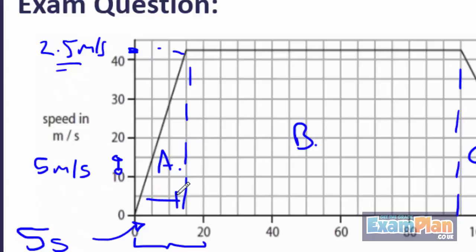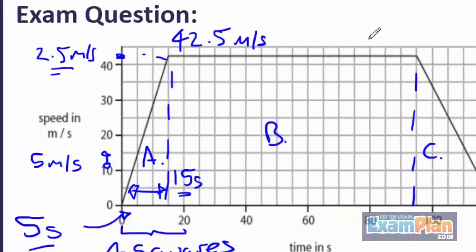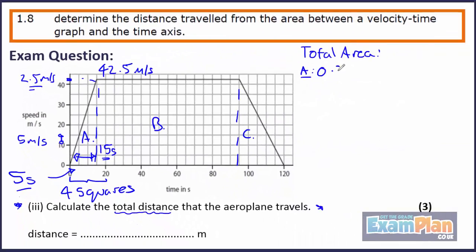Section A has three squares across the bottom, so this is 15 seconds. The height is 42.5 meters per second. So the area is 0.5 times 15 times 42.5. This gives us an answer of 318.75 meters.